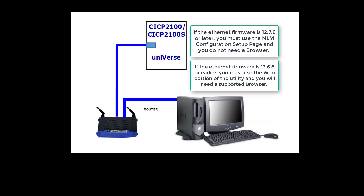Very important: the computer with the Universe Finder utility must be on the same subnet as the IP address provided to the CICP-2100 and CICP-2100S unit by the DHCP-enabled router.